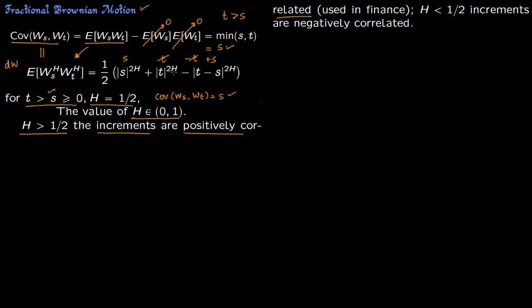So the increments are positively correlated. This is used in finance. You put h greater than half, then you get positively correlated shocks. So your dws, which come in the stochastic differential equation, are positively correlated. And this is used a lot in finance. So the shocks in the future are correlated. If h is less than half, then the increments are negatively correlated.